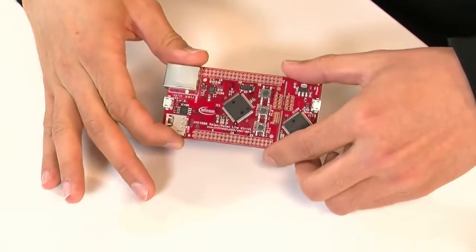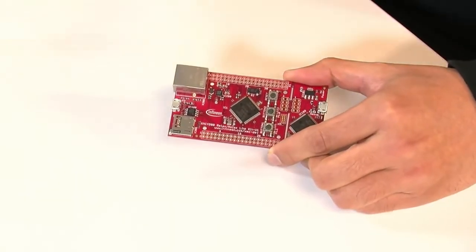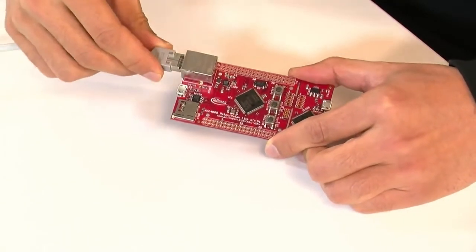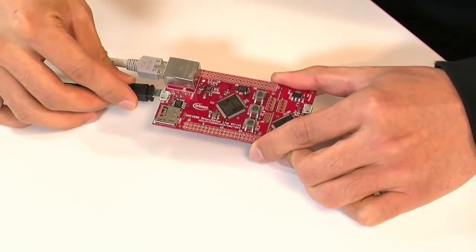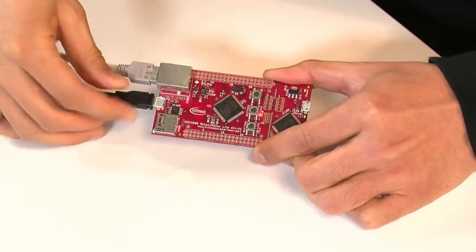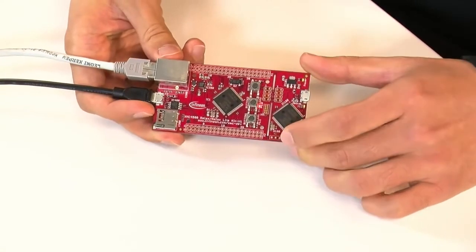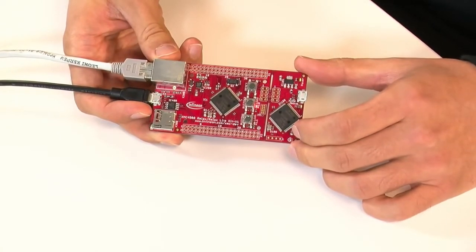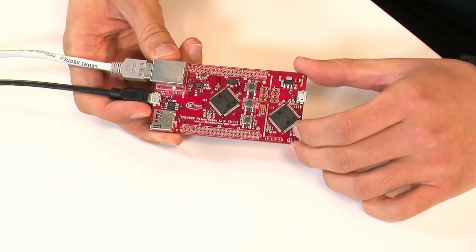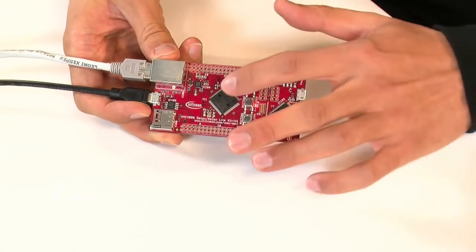And now let's get the relax kit started. For this I will plug in the Ethernet cable connected to the same IP network as my PC. Power this board on and as you see this initial program controls the LED 2 in the same way as on the relax light kit. But additionally an embedded web server is running in here.